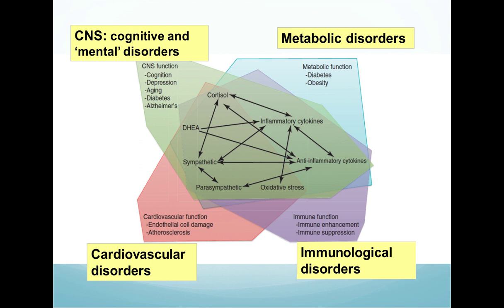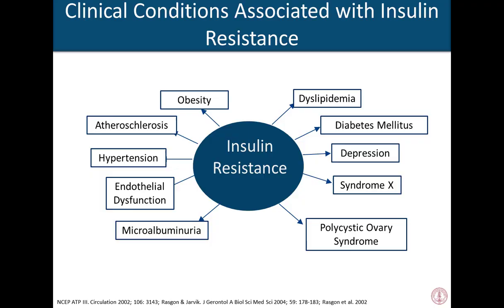These exact same mechanisms underlie not only diseases of the central nervous system and brain, but also metabolic disorders such as diabetes or obesity, immune diseases, and cardiovascular disease. The main pathophysiological condition at the center of these illnesses is called insulin resistance. I will spend some time dispelling notions about what insulin resistance is and how it may be a pertinent and modifiable risk factor in treating diseases of the central nervous system.